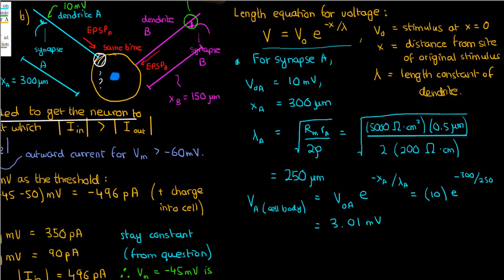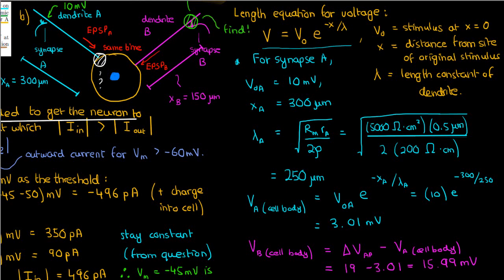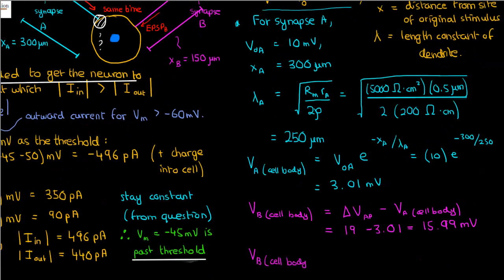The depolarization required from synapse B at the cell body is the 19 millivolts needed to fire an action potential minus the 3.01 millivolts already contributed by synapse A. So the depolarization needed from synapse B at the cell body is 15.99 millivolts. We then use the voltage length equation for synapse B, solving for V₀_B since we know the value at the cell body is 15.99 millivolts.